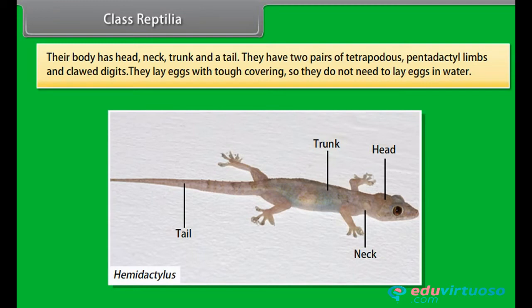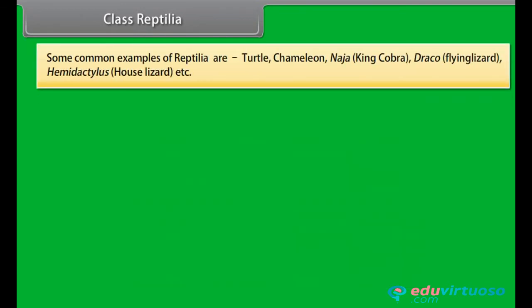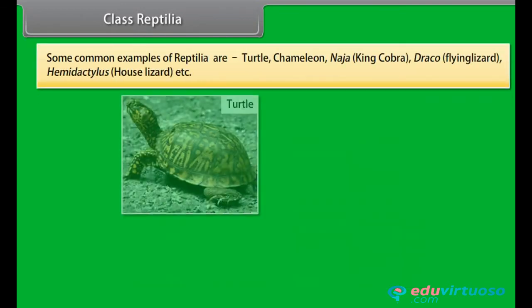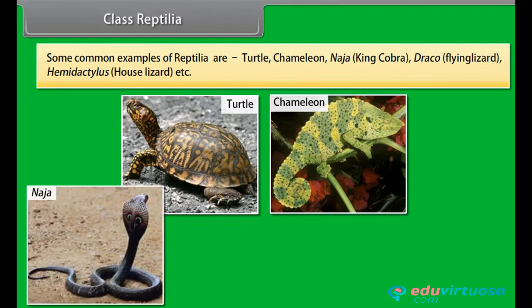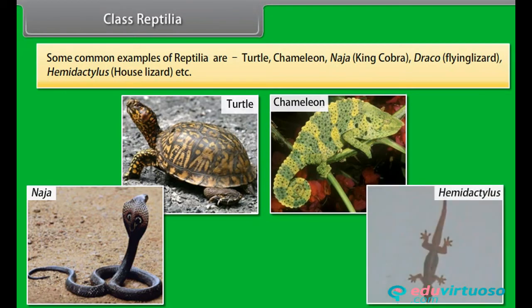They lay eggs with tough covering, so they do not need to lay eggs in water. Some common examples of Reptilia are Turtle, Chameleon, Naja, King Cobra, Draco, Flying Lizard, Hemidactylus, House Lizard, etc.